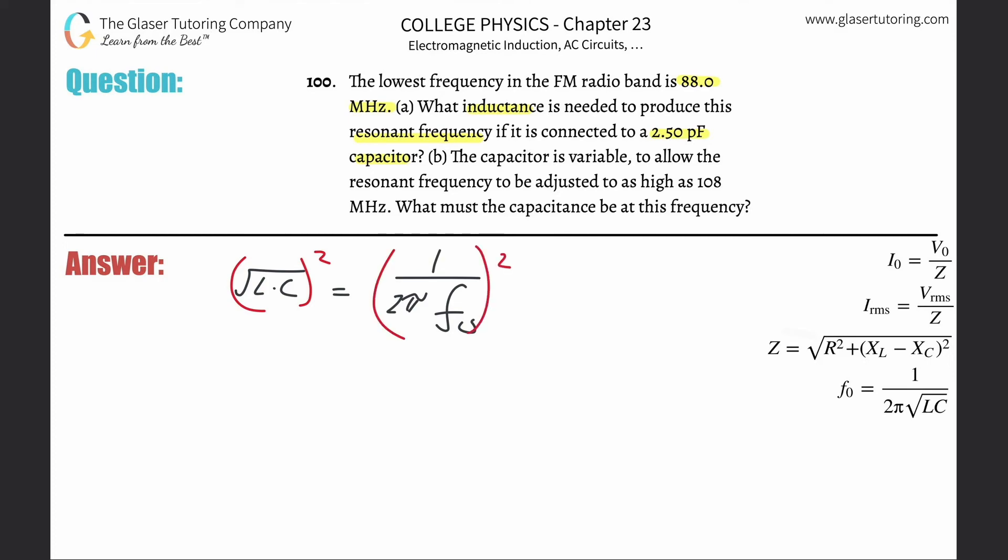After I square both sides, the square root cancels on the left, just leaving with L times C, and this is then going to be 1 over 2π times that resonant frequency squared. If I want to find the inductance, I got to divide out the capacitance from both sides, and there you go. That's how you solve.